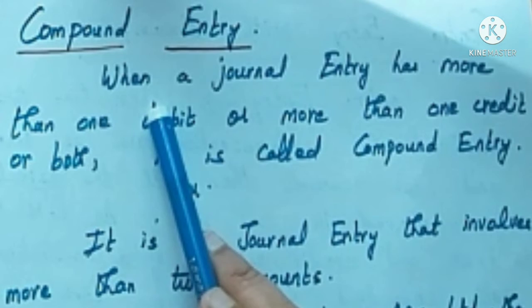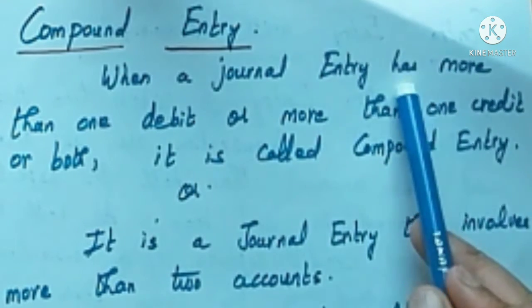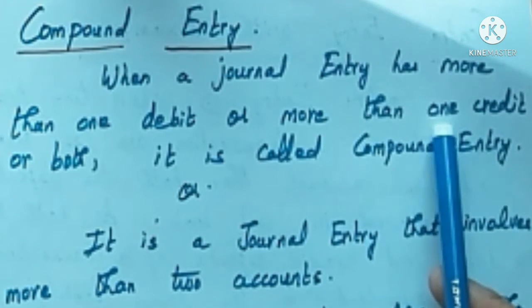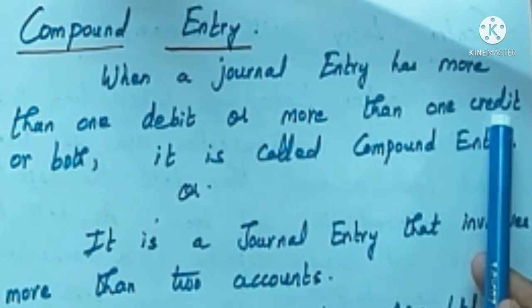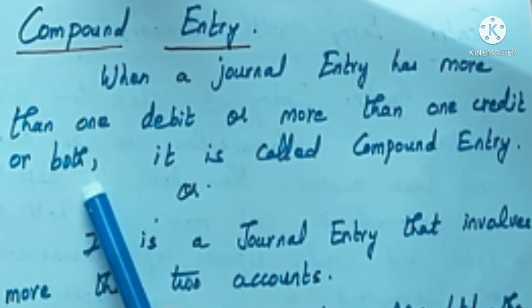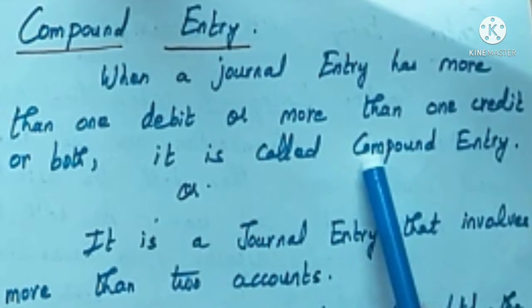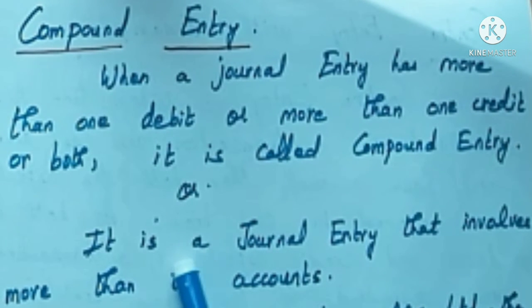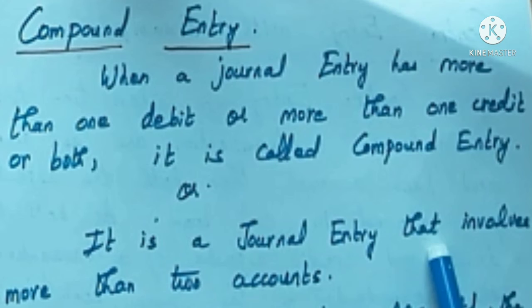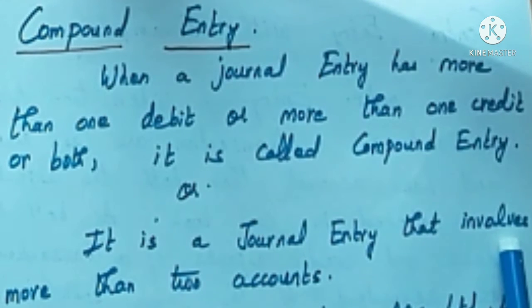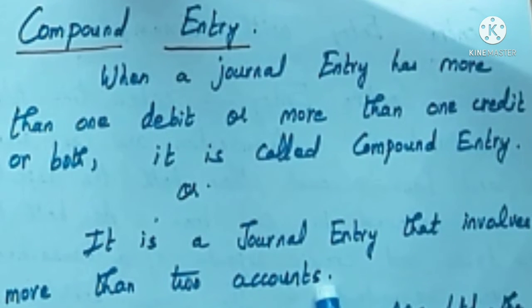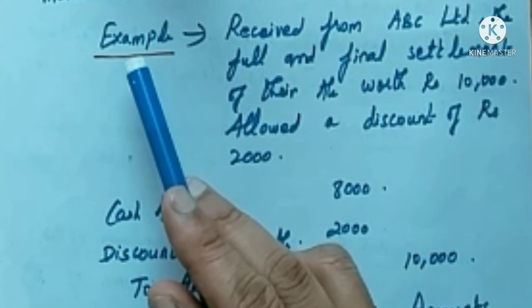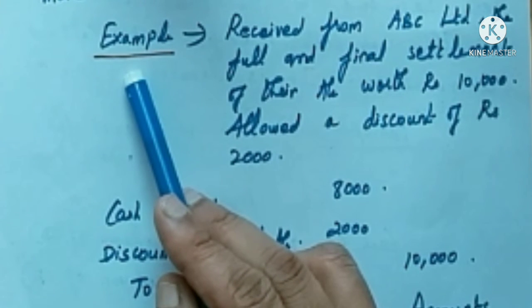What is a compound entry? When a journal entry has more than one debit or more than one credit, or both, it is called a compound entry. It is a journal entry that involves more than two accounts. Let's see an example to understand what is a compound entry.